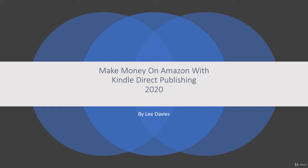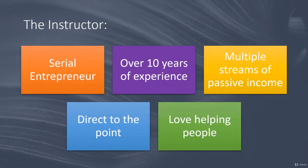We'll also be using other methods to make as much money as possible by maximising all the avenues that Amazon provides to us. I'm a serial entrepreneur with 10 years of creating online businesses. I've currently got 5 businesses that are all online based incomes, all of them passive income, so once I've done the initial work, it's all royalties back to me.